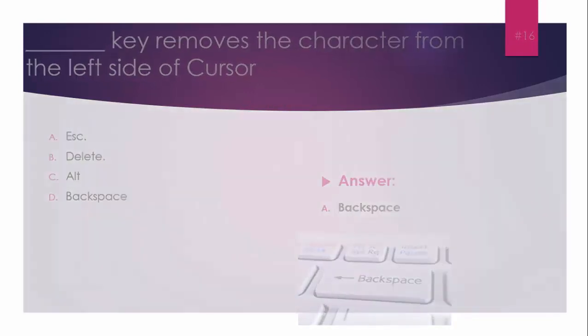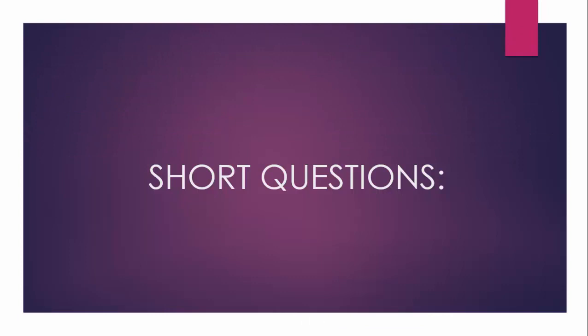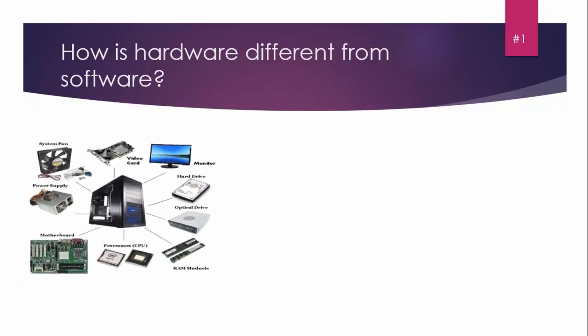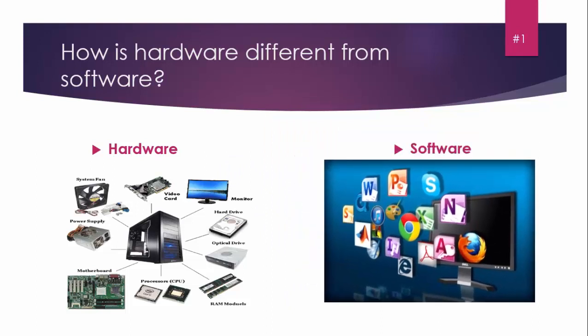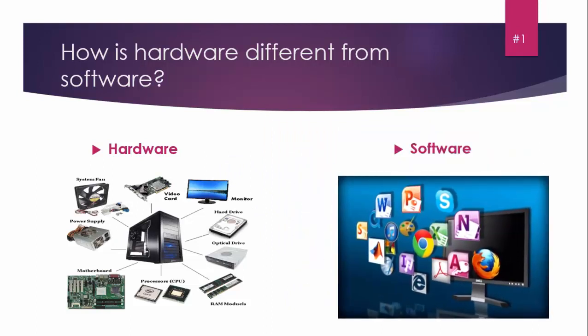Next part of the paper is short questions. First short question: How is hardware different from software? Hardware is a device that can be seen and touched. All devices are hardware. Software can be seen but can't be touched. It's a set of instructions, part of a program.